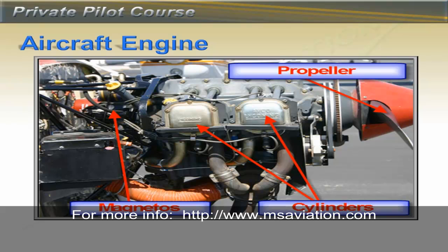Also toward the back of the engine, you'll see an arrow pointing toward the magnetos. There are two on this engine — one is shown here and the other is on the other side of the engine. The magnetos produce the spark for ignition. More on magnetos a little later.